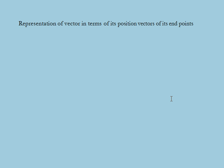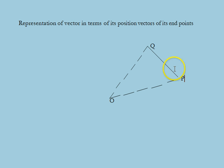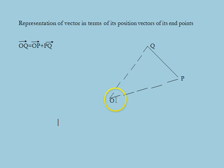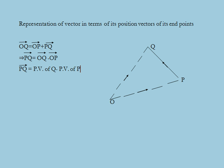Next we are going to discuss the representation of a vector in terms of position vectors of its end points. Let us consider vector PQ with initial point P and end point Q. Let OP and OQ be the position vectors of points P and Q respectively. Using the triangle law in triangle OPQ, we have vector OQ equal to vector OP plus vector PQ, which implies that vector PQ is equal to vector OQ minus vector OP. Therefore, vector PQ is equal to the difference of the position vector of Q and the position vector of P.